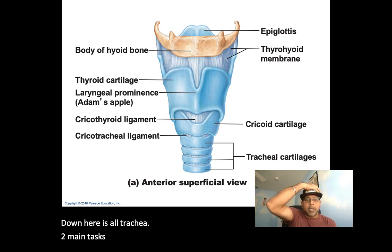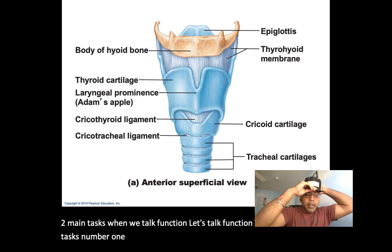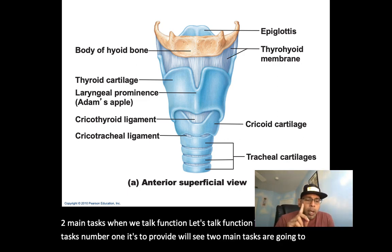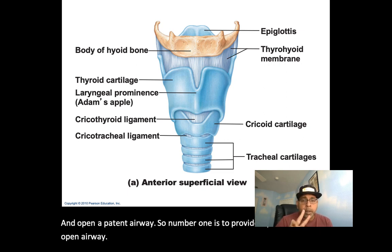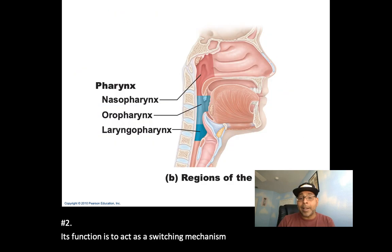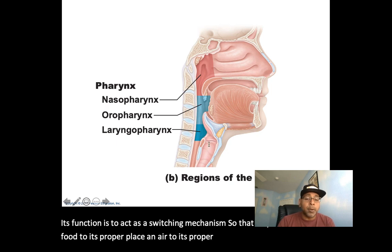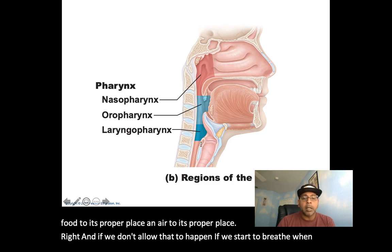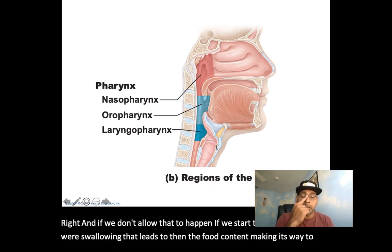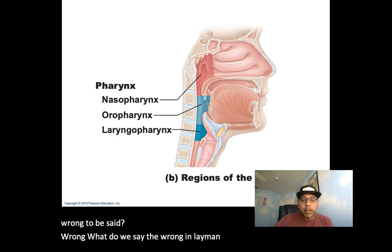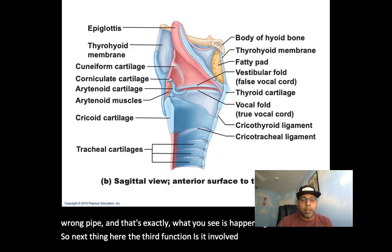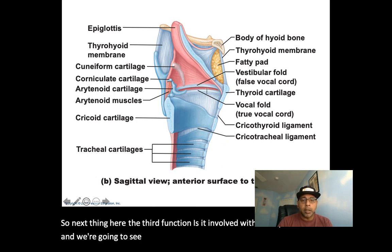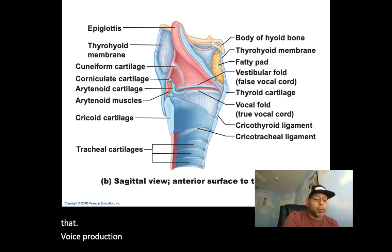The larynx has two main tasks: number one, to provide a patent — an open — airway; number two, to act as a switching mechanism so it can route food to its proper place and air to its proper place. If we start to breathe while swallowing, food content makes its way to the wrong tube — went down the wrong pipe. A third function is voice production, with the vocal cords being responsible for that.